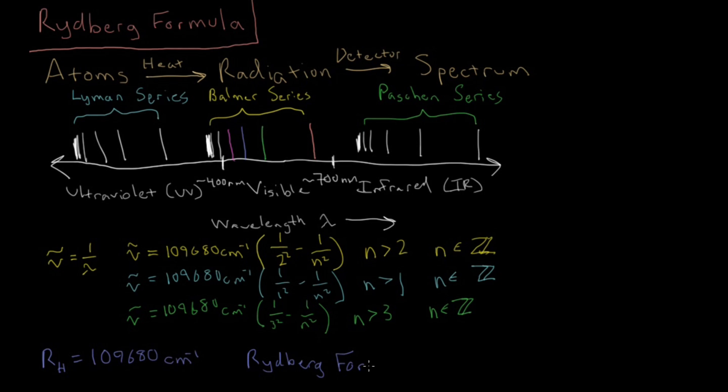And then the Rydberg formula, as it is called, for predicting the position of any line on the hydrogen atom spectrum, becomes nu bar equals the Rydberg constant times one over n1 squared minus one over n2 squared. Again, noting that n2 is always greater than n1, and n1 and n2 are both integers.